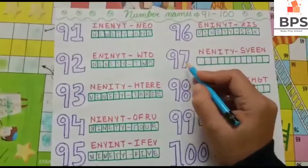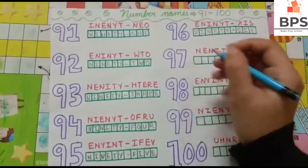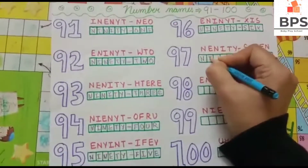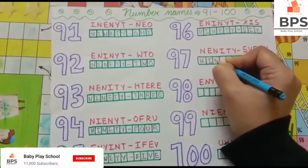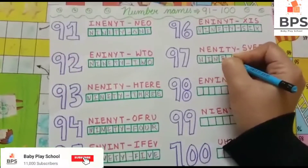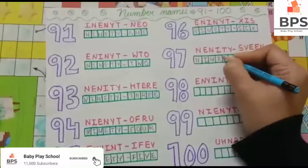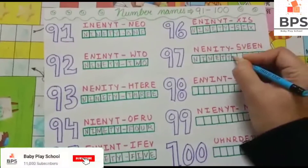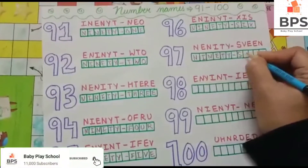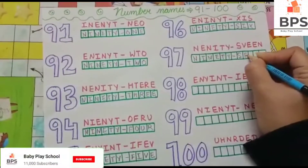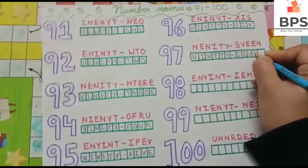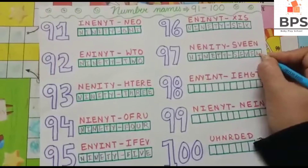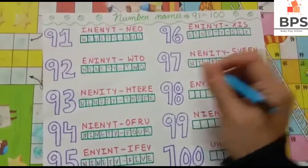97, 97, 97 — N-I-N-E-T-Y, 90, S-E-V-E-N, 7, so 97.